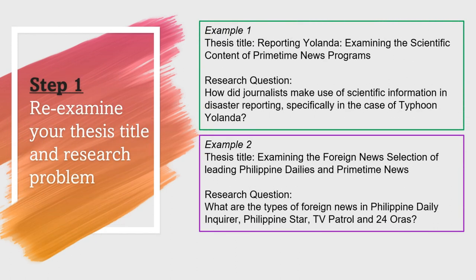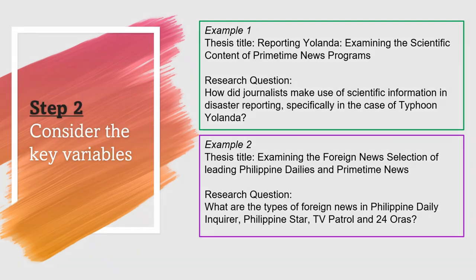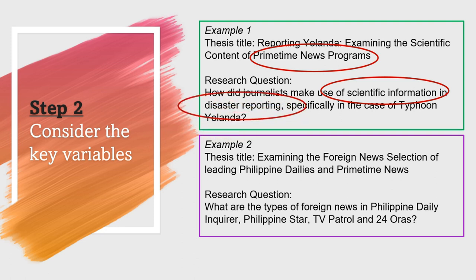For example, step one: re-examine your thesis title and research problem. In example one, the thesis title is 'Reporting Yolanda: Examining the Scientific Content of Primetime News Programs.' The research question is: How did journalists make use of scientific information in disaster reporting, specifically in the case of Typhoon Yolanda? The key variables in example one would be Primetime News Programs, Scientific Information, and Disaster Reporting.